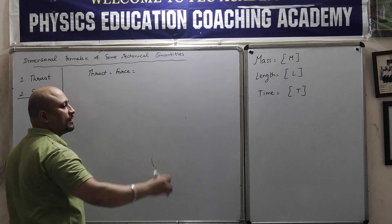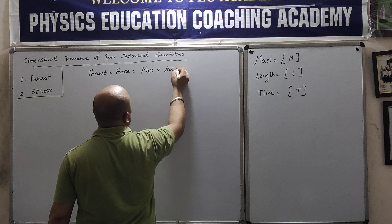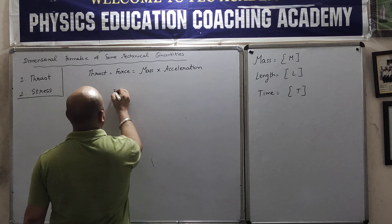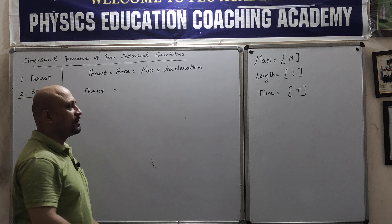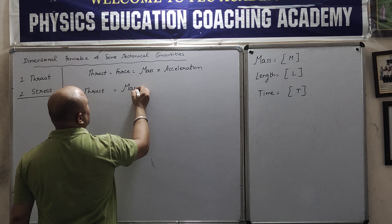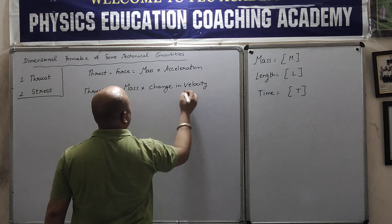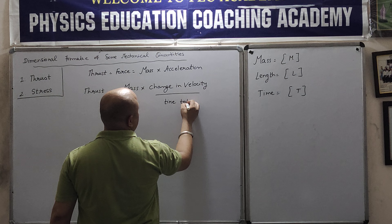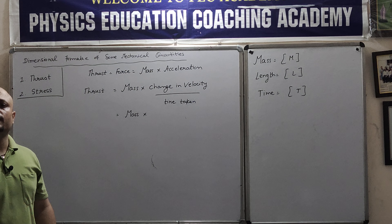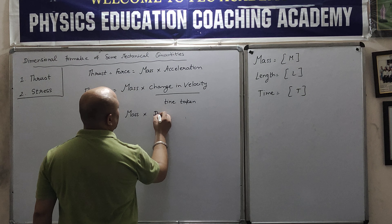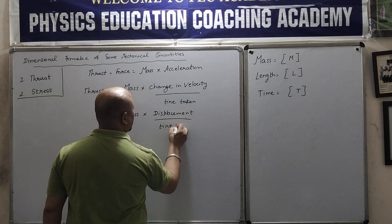Now, how do we find force? According to Newton's second law, force equals mass into acceleration. So the formula we have for thrust is mass into acceleration. Now, what is acceleration? That is change in velocity upon time taken. And what is velocity? That is displacement upon time taken. So time becomes squared.